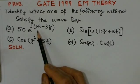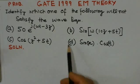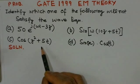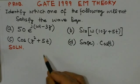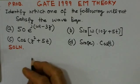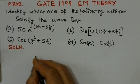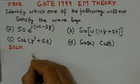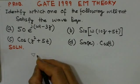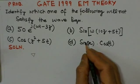So if any one of these options is not a solution of the wave equation, it will not satisfy the wave equation. First we will write what is the wave equation, and then we will try to see which of these options do not satisfy the wave equation.